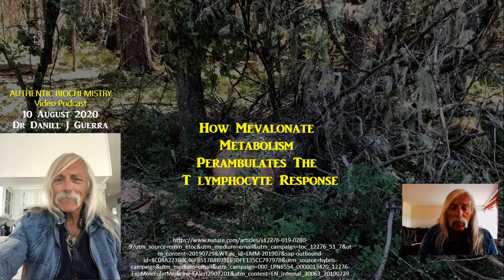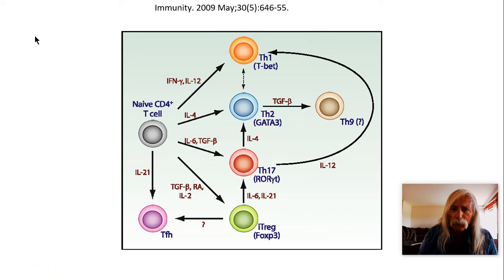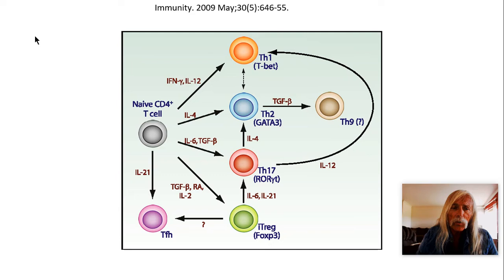So that's me, Dr. Dan Guerra, and this is Authentic Biochemistry. From a paper published in 2009 in the journal Immunity, I want to make sure we're on the same page with the basics of T-cells. There are CD8 positive and CD4 positive T-cells. For a naive CD4 positive T-cell, when it is exposed to a cytokine called interleukin-21, it can be transformed into a T-follicular helper cell — that's what TFH stands for.